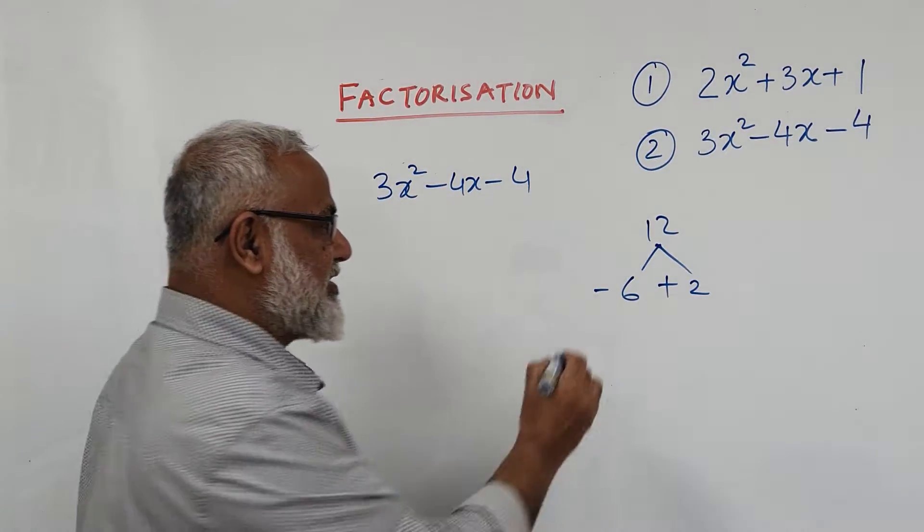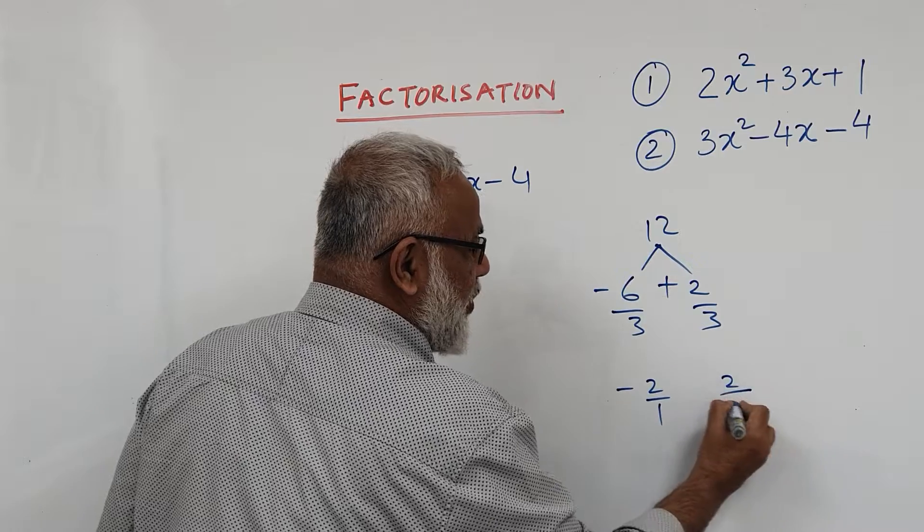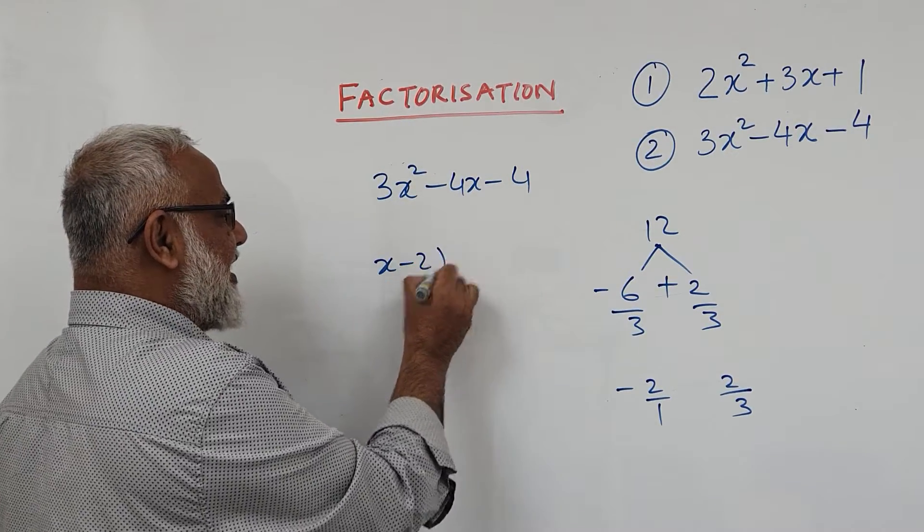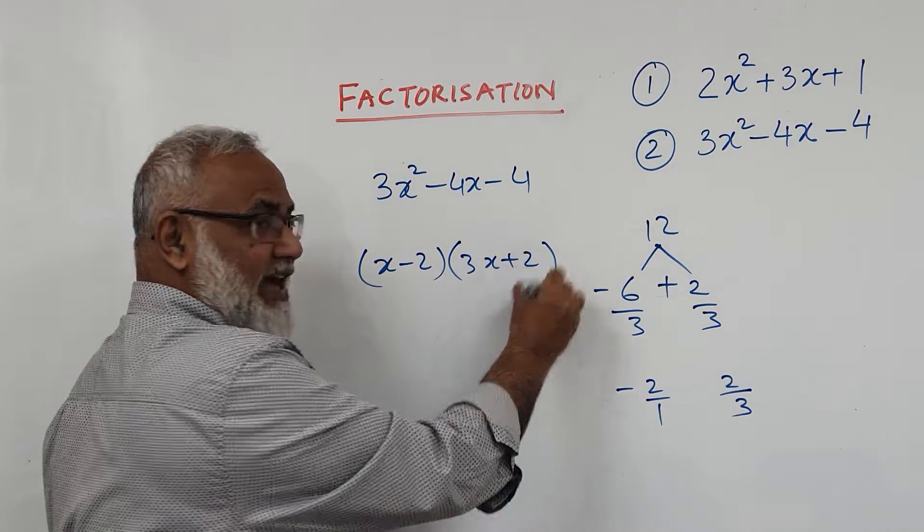You divide by 3 both sides. Divide by 3, divide by 3. So minus 2 over 1 and 2 over 3. So what is the answer? So x minus 2 and 3x plus 2. That will be your answer.